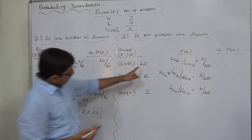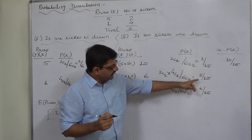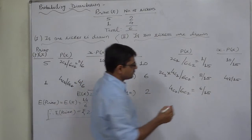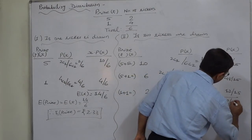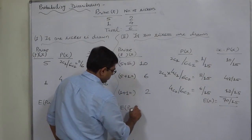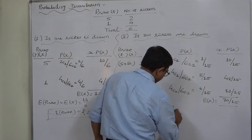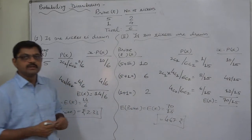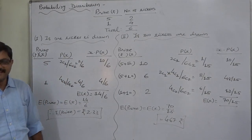Now we calculate E(X): 10 times 1/15 is 10/15, 6 times 8/15 is 48/15, and 2 times 6/15 is 12/15. Adding: 48 plus 12 plus 10 equals 70, so E(X) equals 70 by 15, which is rupees 4.67. So if two tickets are drawn, the expected price is rupees 4.67 — exactly twice the expectation when one ticket is drawn. Thank you very much.